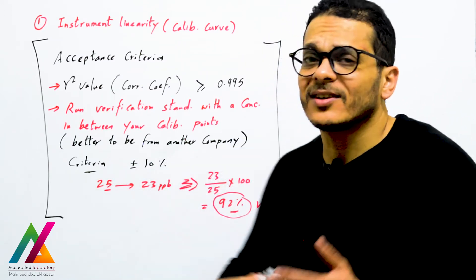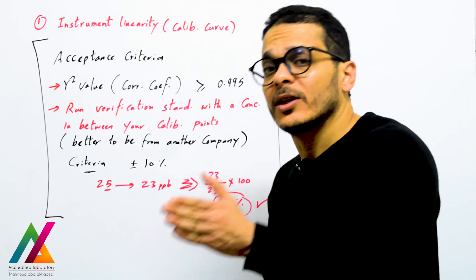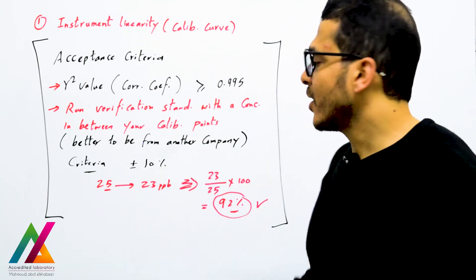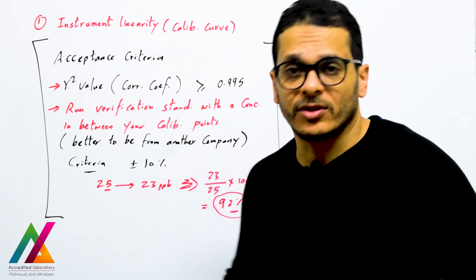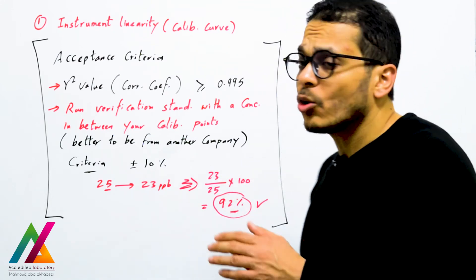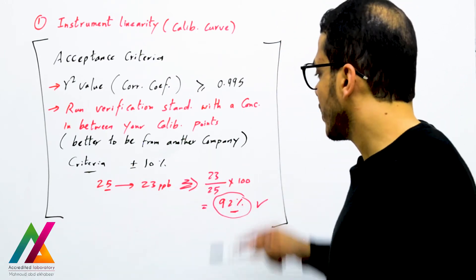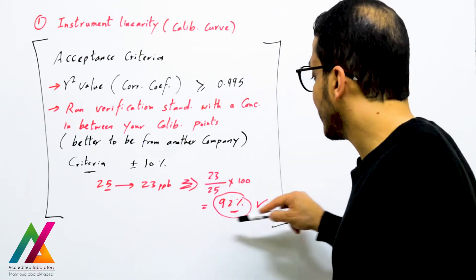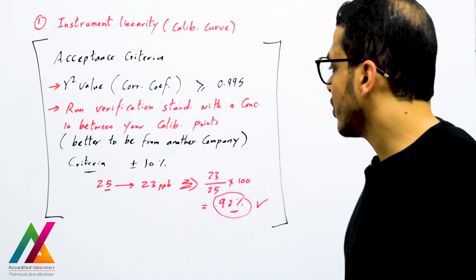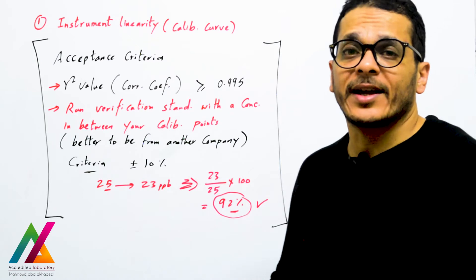The verification standard is preferably from a different company than the one used for calibration standards, though you may use the same source if needed. The acceptance criteria for this standard is ±10% for higher concentrations, and ±20% to ±30% for lower concentrations per some guidelines. For example, running 25 ppb and obtaining 23 ppb gives a recovery of 92%, which is within the ±10% acceptance range of 90–110%, so the calibration curve is accepted.